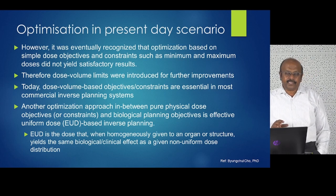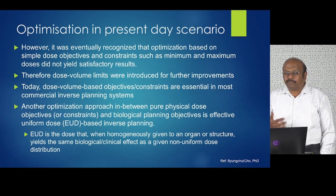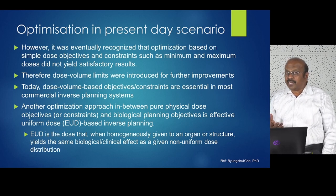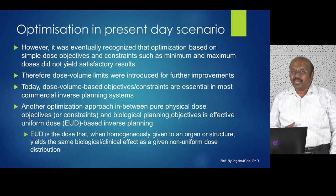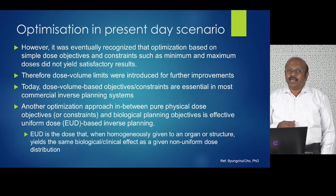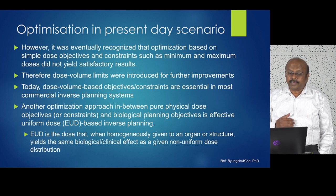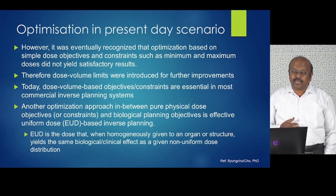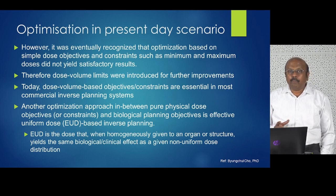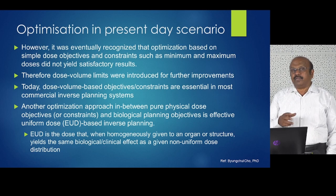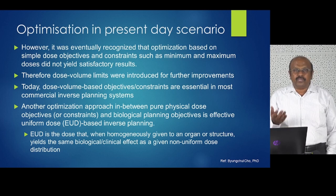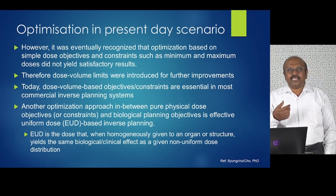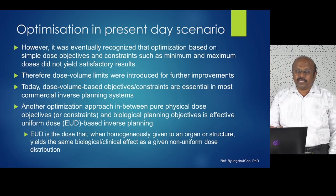In the present day, optimization is slightly more advanced. It was recognized that optimization based on simple dose objectives and constraints such as minimum or maximum dose did not yield satisfactory results. Therefore dose-volume limits were introduced. Today, dose-volume objective constraints are essential in most commercial inverse planning systems. Those working with IMRT will know volume is very important — V95, V98, and so on. The dose-volume objective is what is currently used.